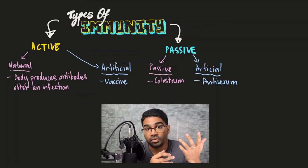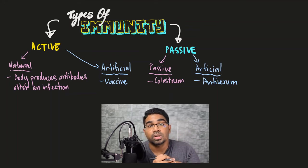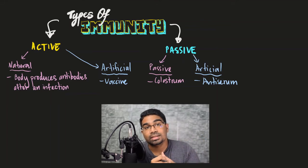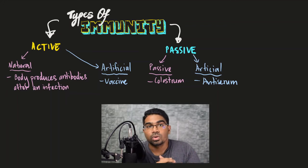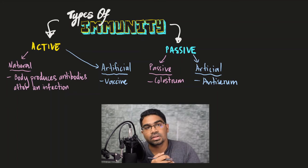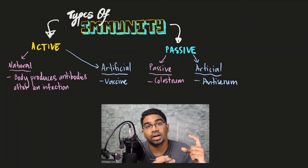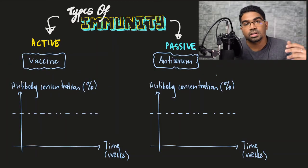Antiserum is especially important for diseases that are potentially fatal and need immediate attention — for example, rabies. If we get infected with rabies we cannot administer a vaccine because the disease is already active, and vaccines take time before they become effective. So we need to administer the rabies antiserum instead, which already contains the antibodies needed to immediately fight against the disease.